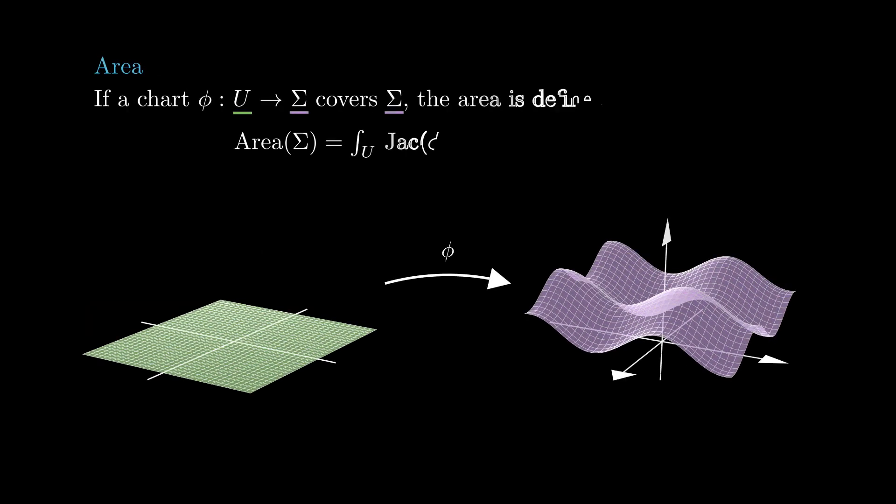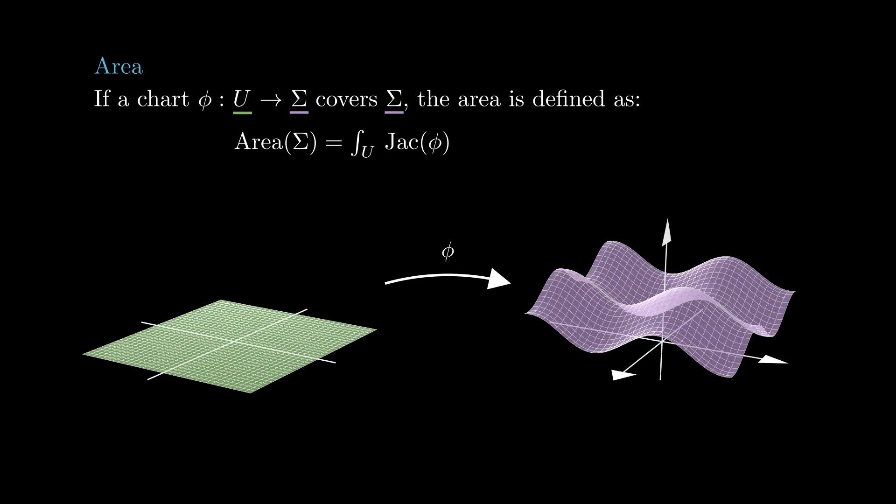With this notion, one can define the area of a surface covered by a single chart as the integral over the domain of the parametrization of the Jacobian of the parametrization.